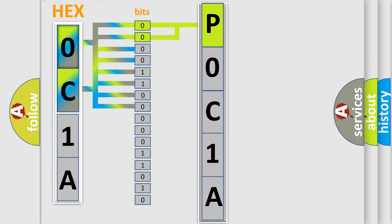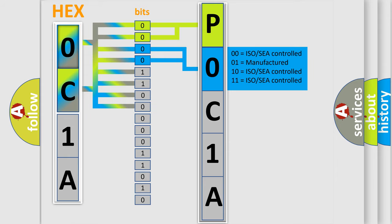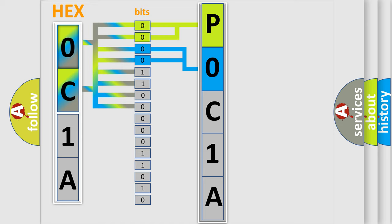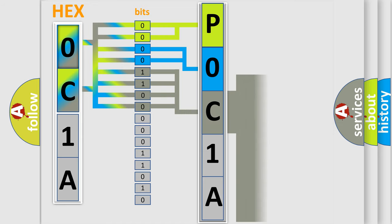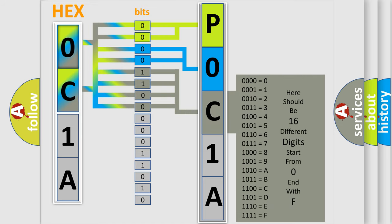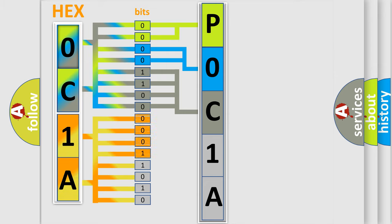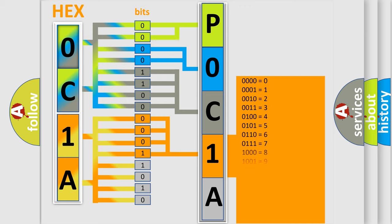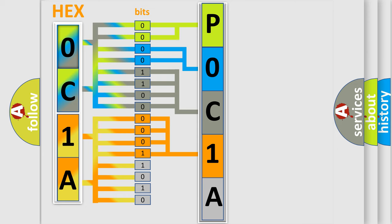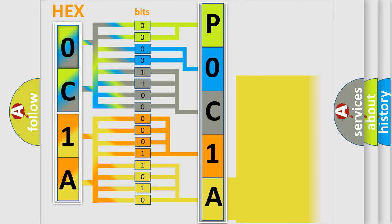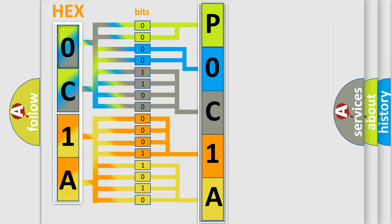The next two bits determine the second character. The last bits of the first byte define the third character of the code. The second byte is composed of a combination of eight bits. The first four bits determine the fourth character of the code, and the combination of the last four bits defines the fifth character. A single byte conceals 256 possible combinations.